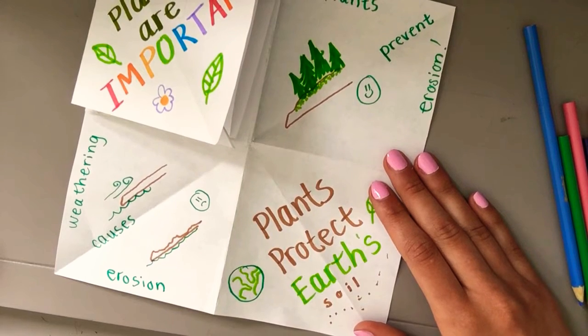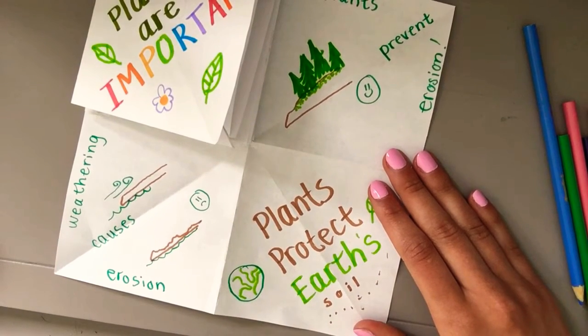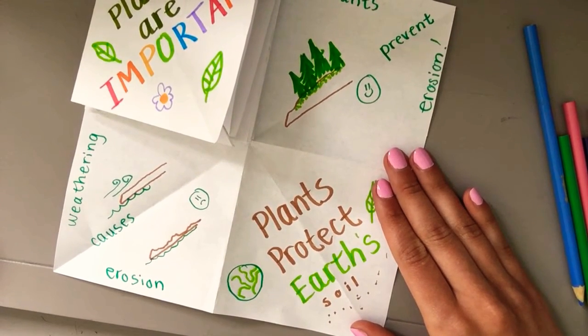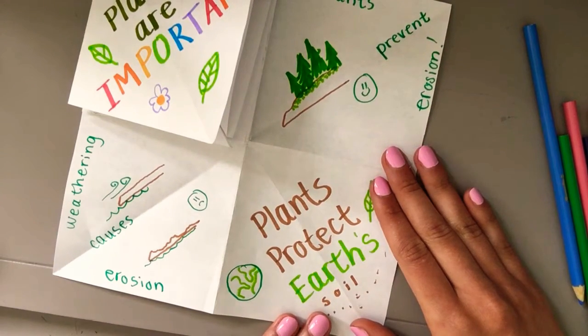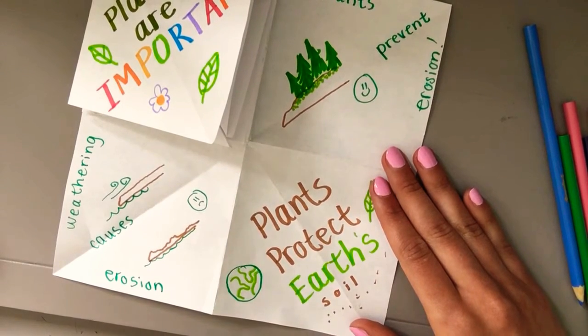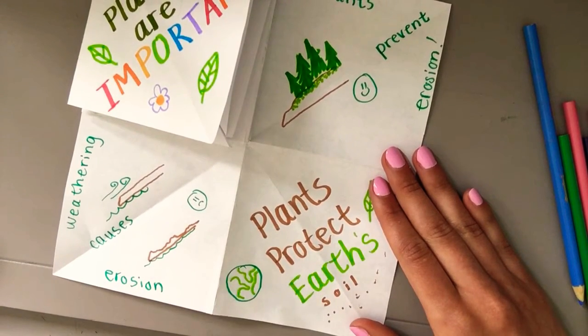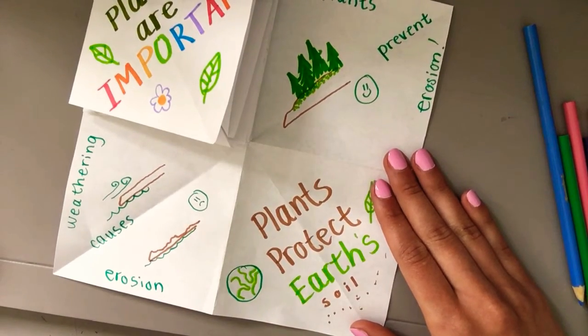What we're talking about today is how plants protect Earth's soil. Soil is the ground beneath our feet. Some call it dirt. It's the top layer of Earth's surface. It's very important because plants grow in it, but plants also protect it. They protect it in multiple ways.